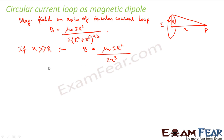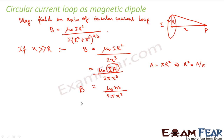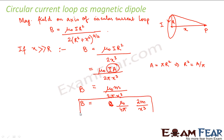The area of this loop is A = πR², so we can write R² = A/π. Substituting, we get B = μ₀I·(A/π) / (2x³). Now current times area is nothing but magnetic moment M. So this becomes B = μ₀M / (2πx³). Multiplying numerator and denominator by 2, we get B = (μ₀/4π) · (2M/x³). This is the magnetic field at a far axial point for a circular current loop.